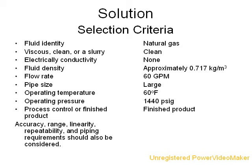In order to select a proper flow sensor, let's look at some selection criteria. First, identify the fluid that is being transported. Then, identify some properties of the fluid — is it viscous, clean, or a slurry? Is it electrically conductive? And what is the fluid density? Also, determine the flow rate and pipe size needed for transport. What will be the operating temperature and pressure of the system? And is the control part of a process or finished product? Additionally, accuracy, range, linearity, repeatability, and piping requirements should also be considered.